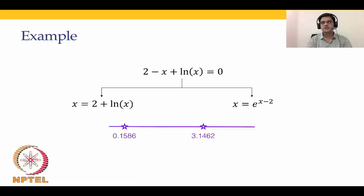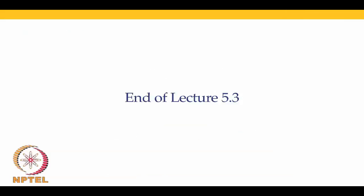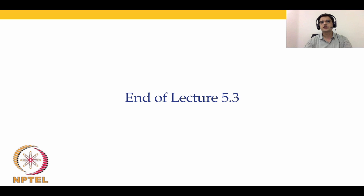In summary: with g(x) = 2 + ln(x), starting anywhere on the line converges to the second solution x = 3.1462. With g(x) = e^(x-2), starting between 0 and the second solution converges to the first solution x = 0.1586, but starting beyond the second solution causes divergence. That concludes lecture 5.3. In lecture 5.4, we will cover the Newton-Raphson method, one of the most popular methods for solving nonlinear algebraic equations. Thank you and see you in the next lecture.